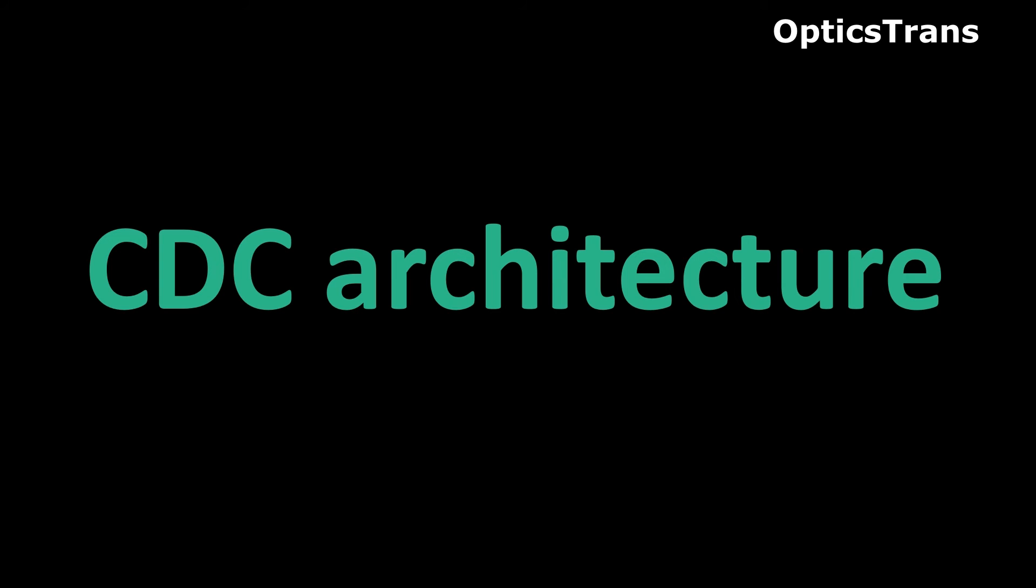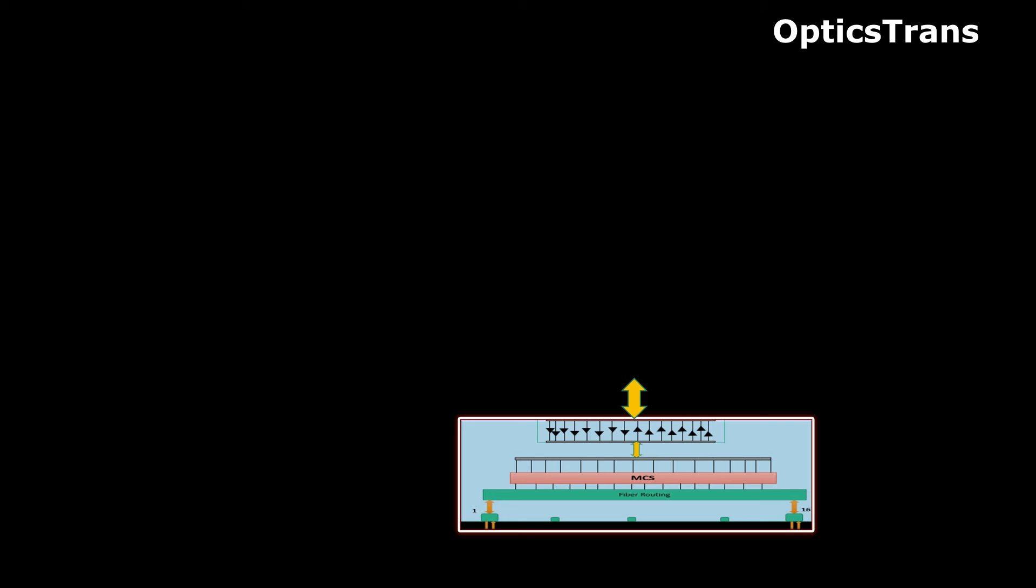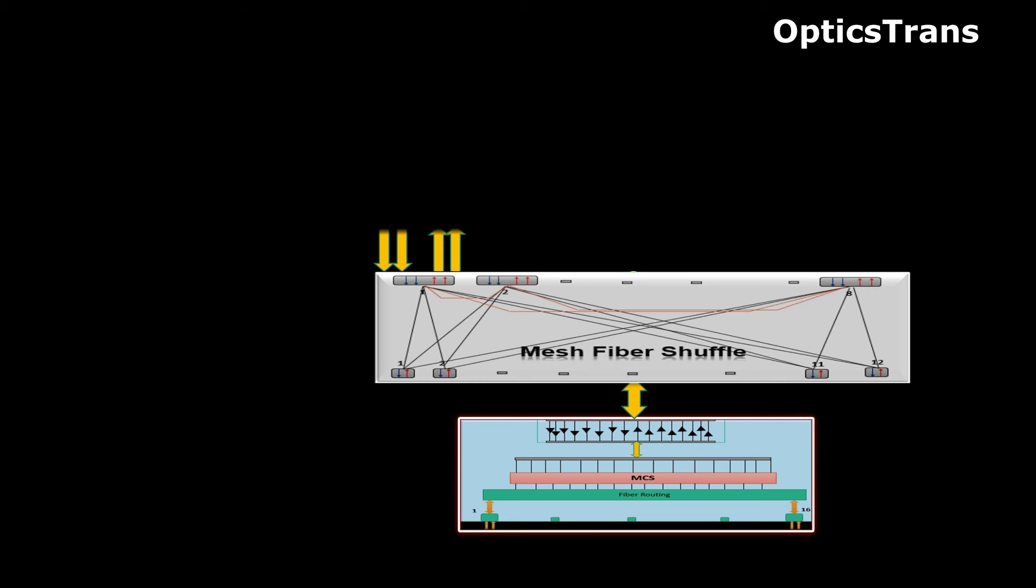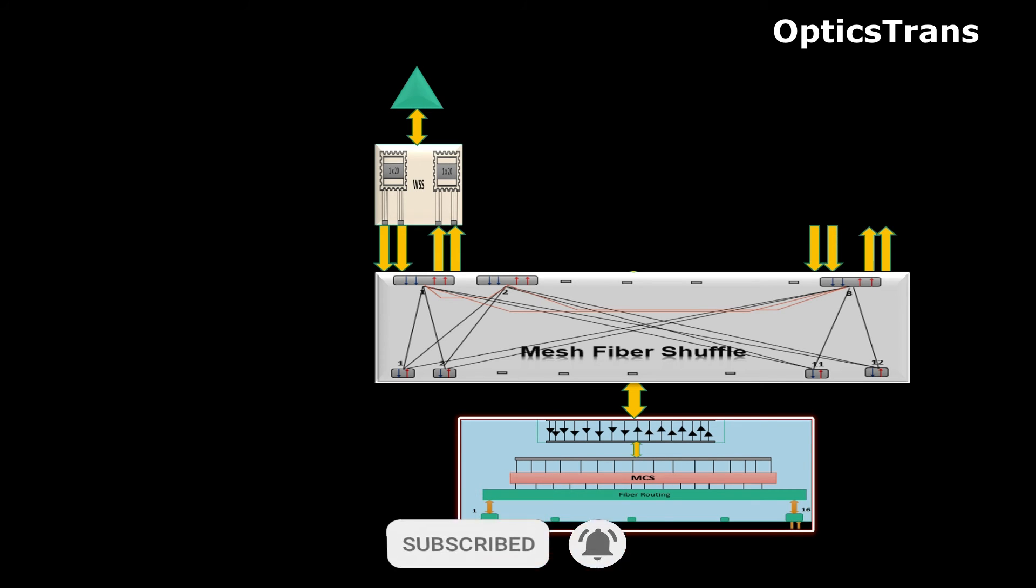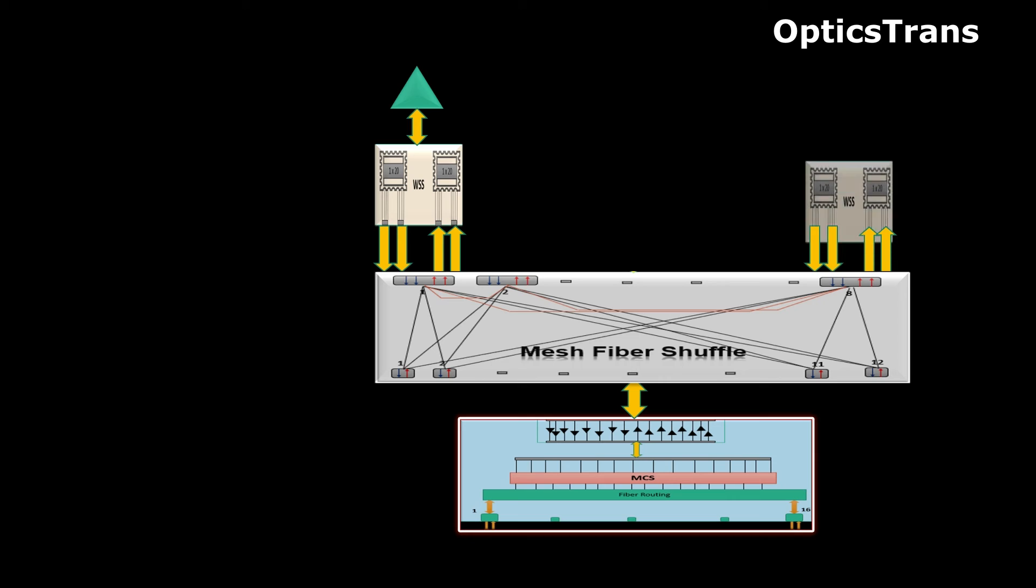These are the main components of CDC architecture. Now let's connect them to each other to transmit the signal. MCS card connects with fiber shuffle. And the output of fiber shuffle connects with eight dual WSS for different directions. Output of WSS connects with amplifier. Similarly, if want to connect more directions, will connect WSS with fiber shuffle.